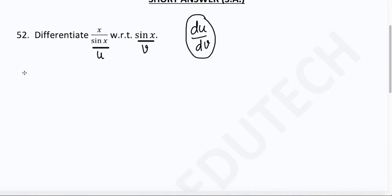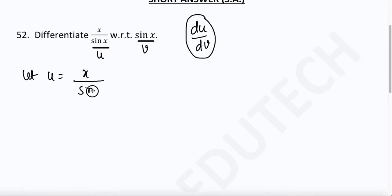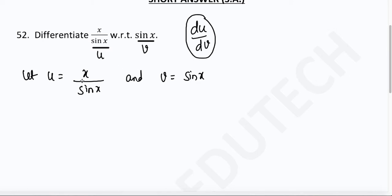You have mainly two functions given. Let u be equal to the first function, that is x upon sin(x). And v is equal to the second function, that is sin(x). Now we have two functions to differentiate.